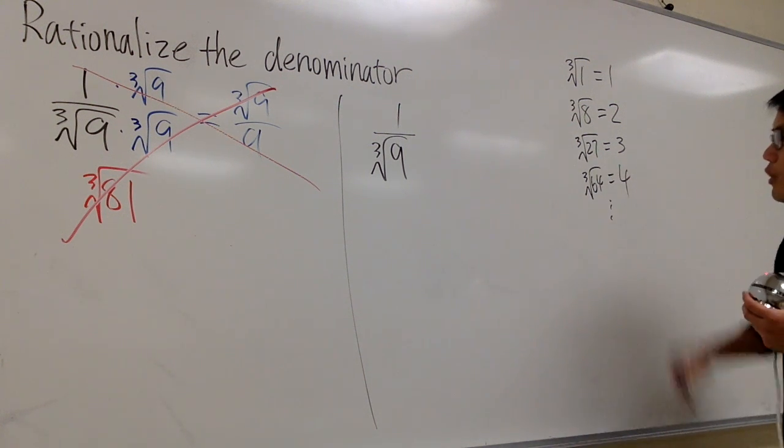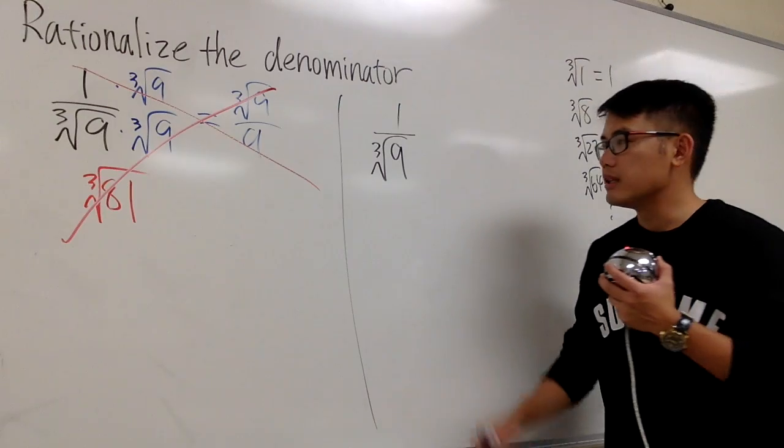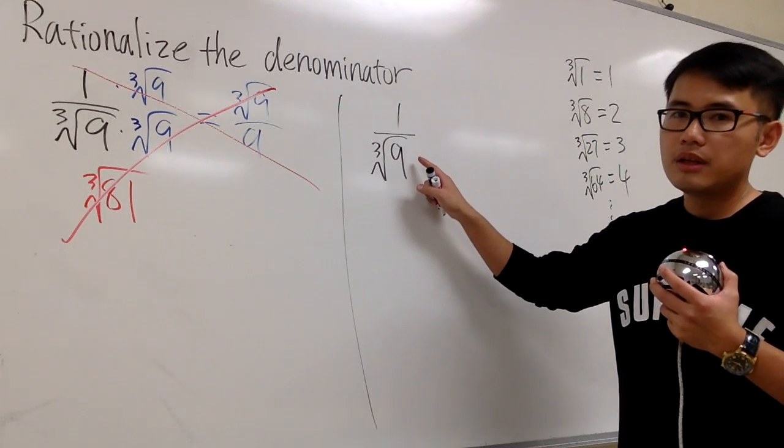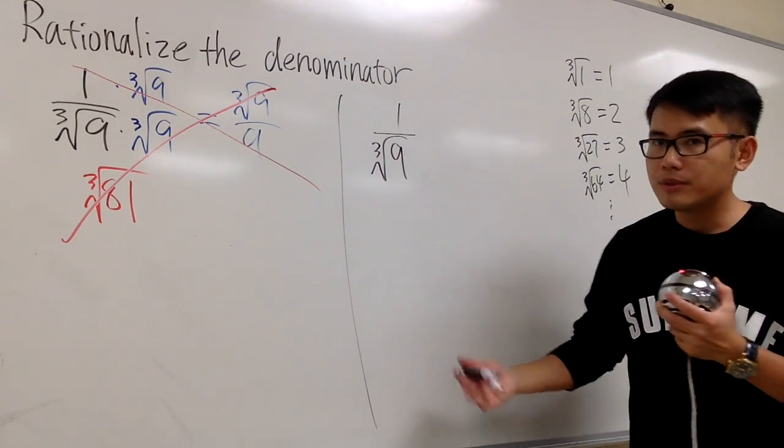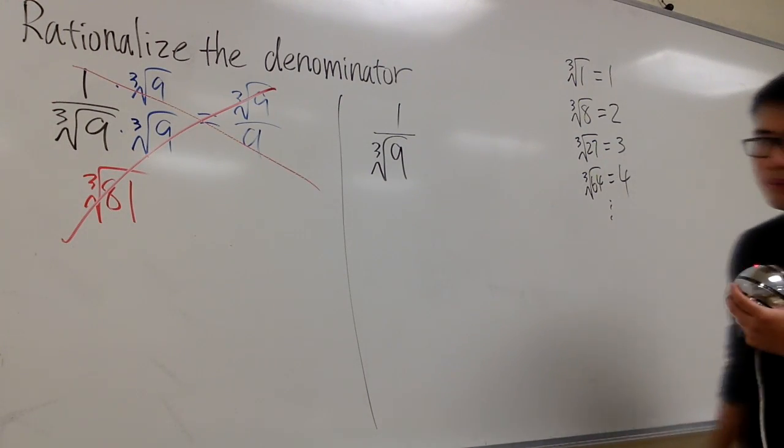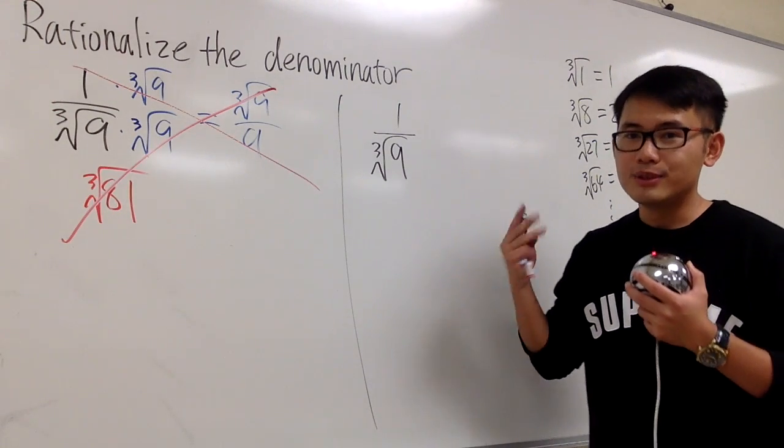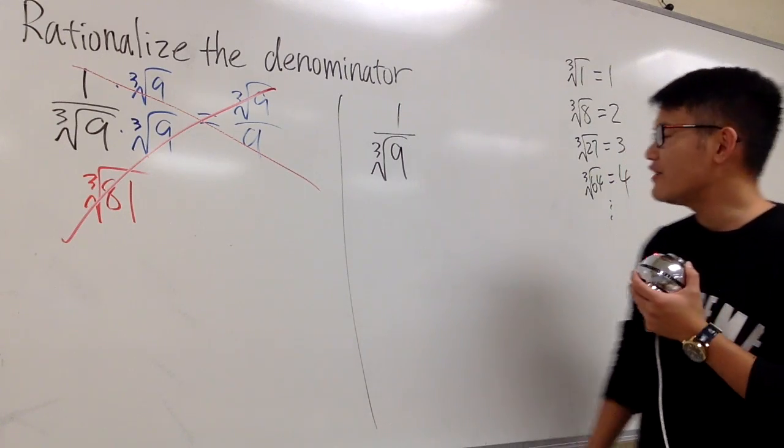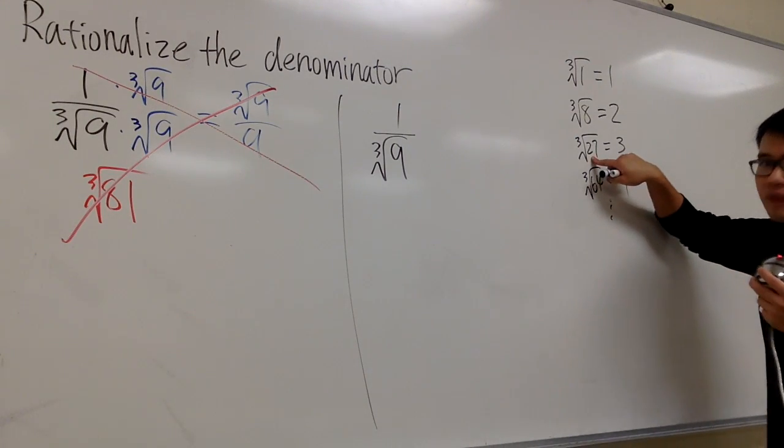And so on. And now the question is, here we have 9 already. Can we just multiply 9 by a number so that it matches with one of these? Yes, we know 9 times 3 will give us 27. And 27 is a perfect cube.